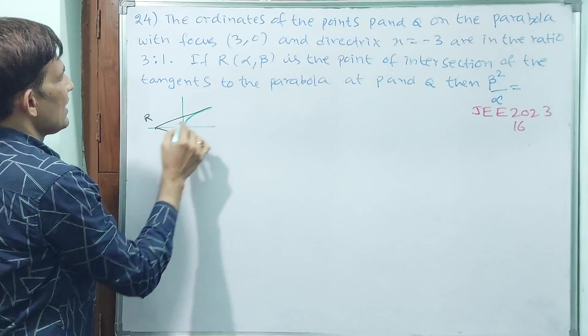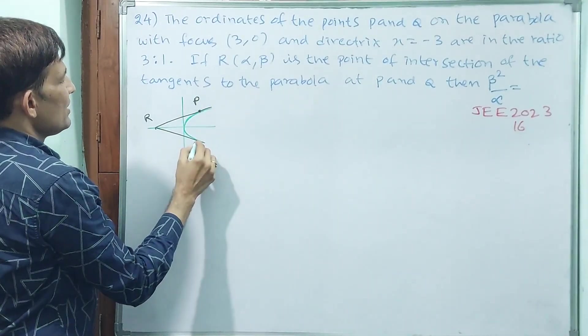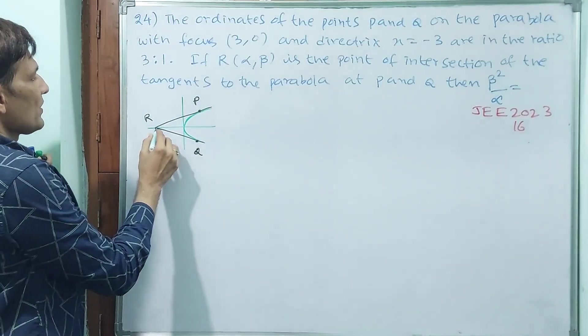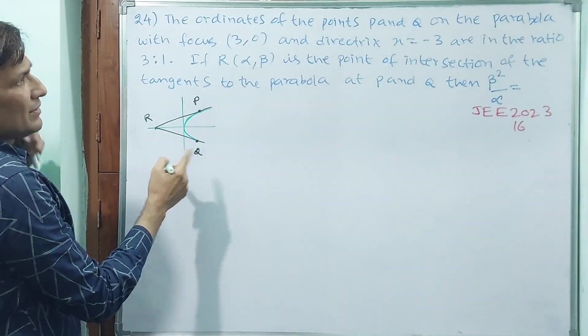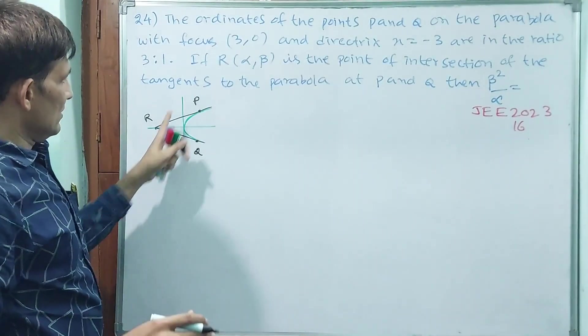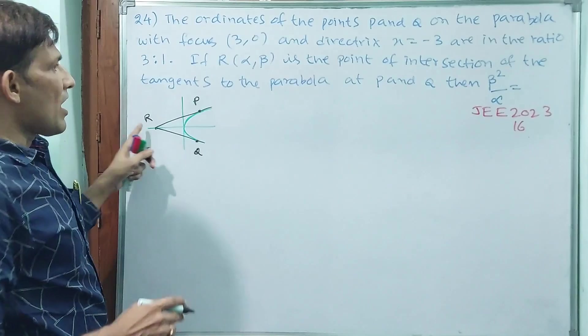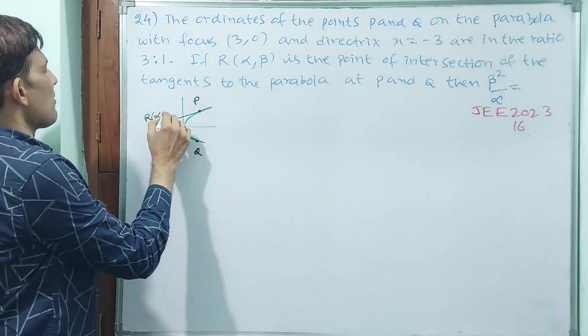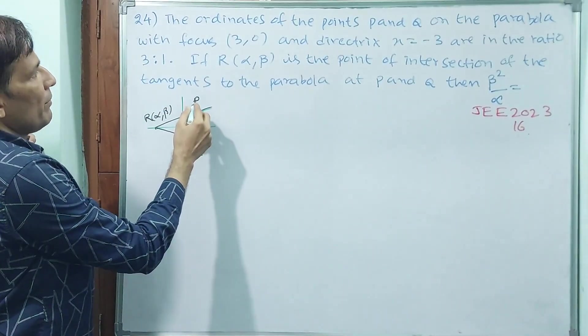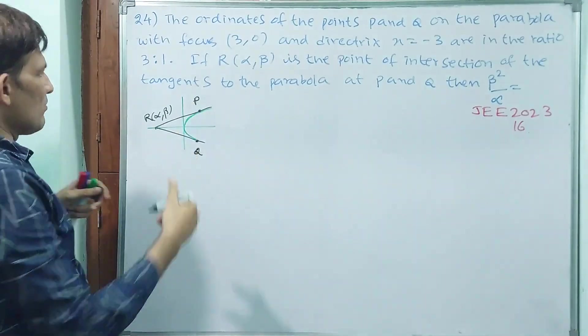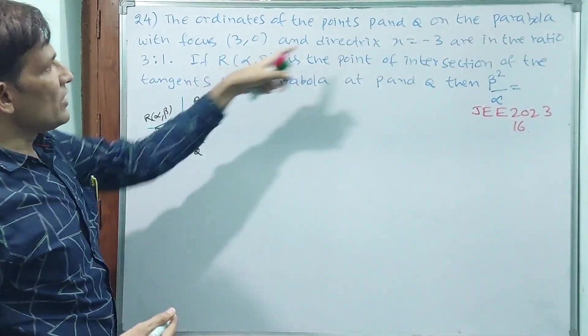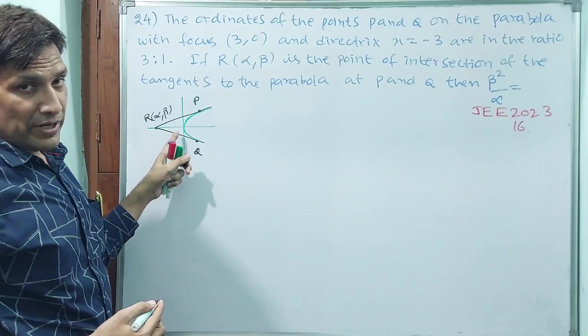This point you take as R, this point you take as P, this point you take as Q. R will be having (alpha, beta). P points you have to take on parabola, and relations are given, ordinate relations, and solve this and find alpha, beta.